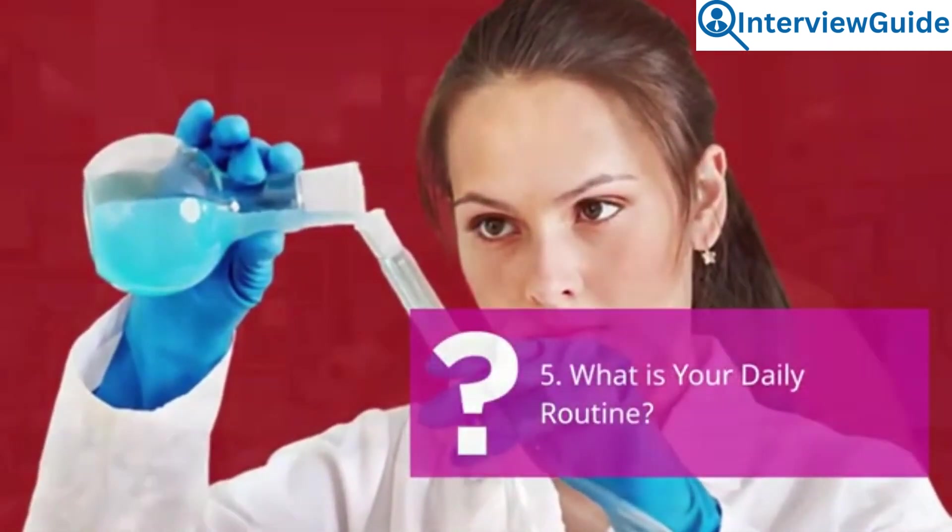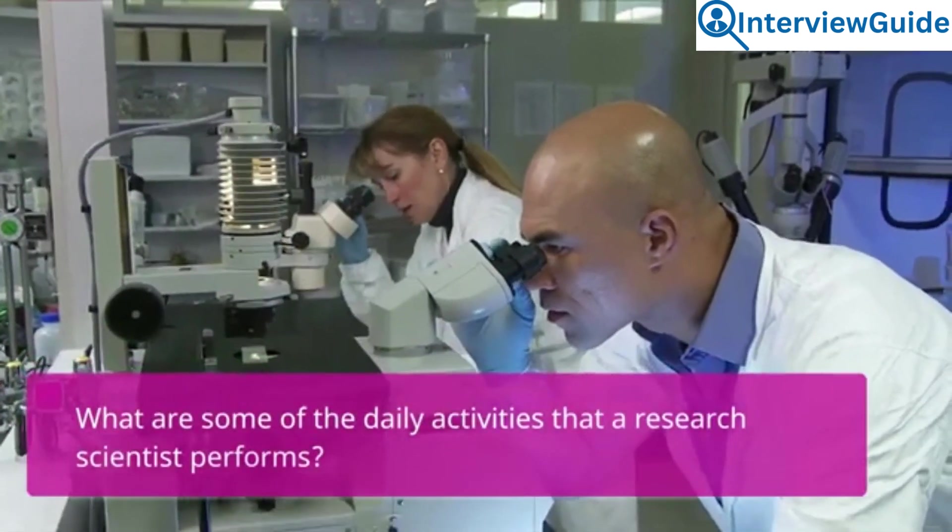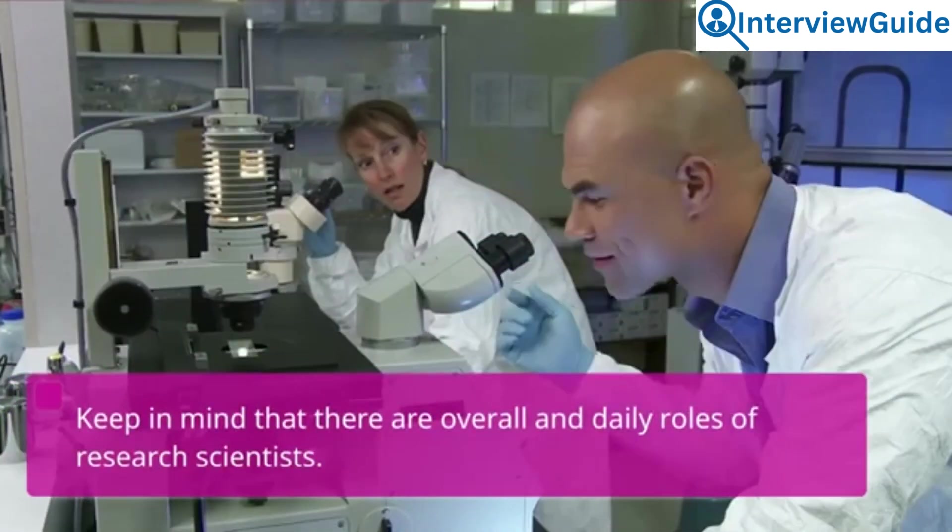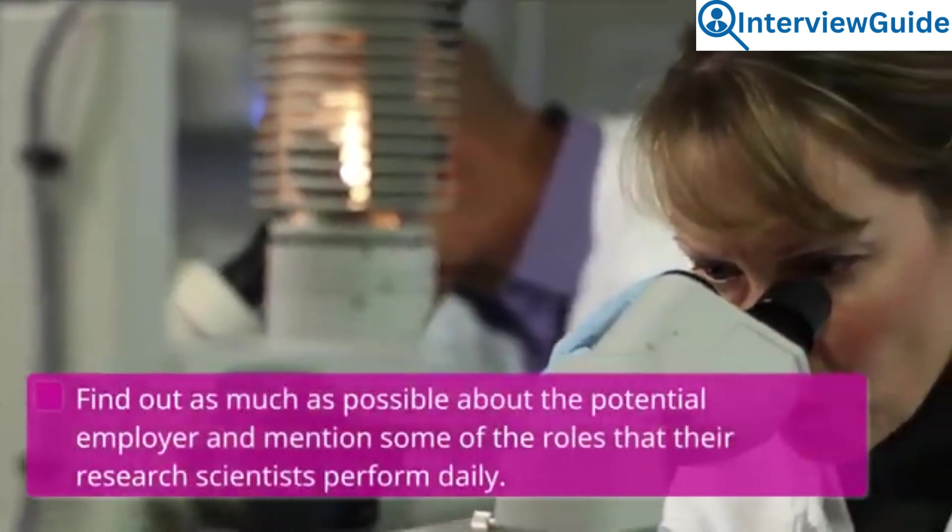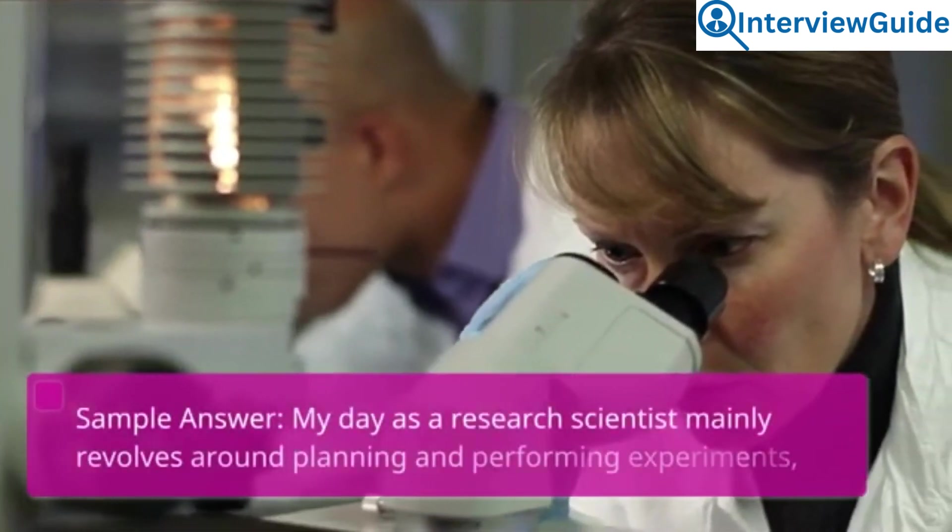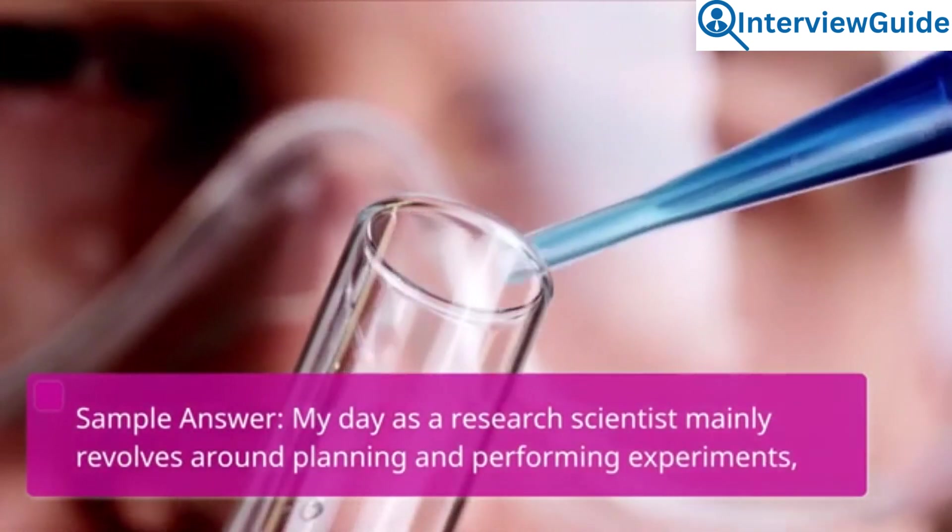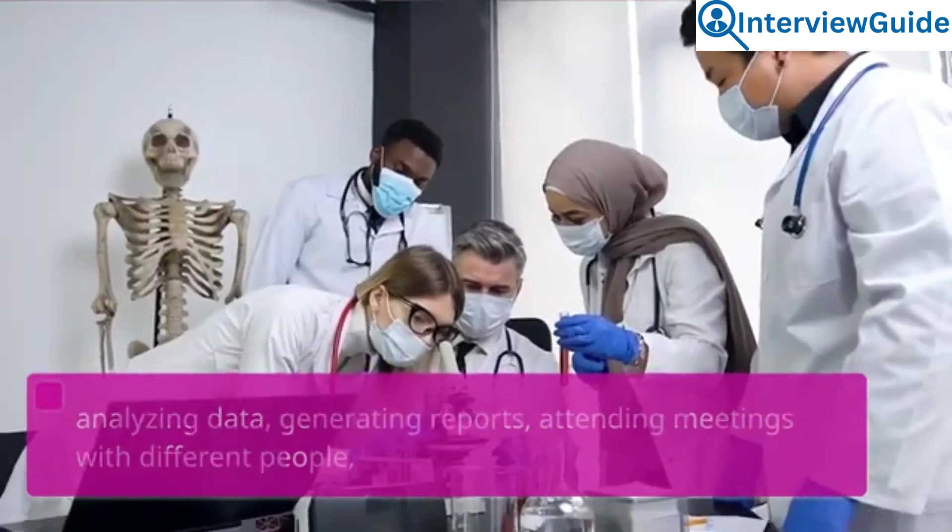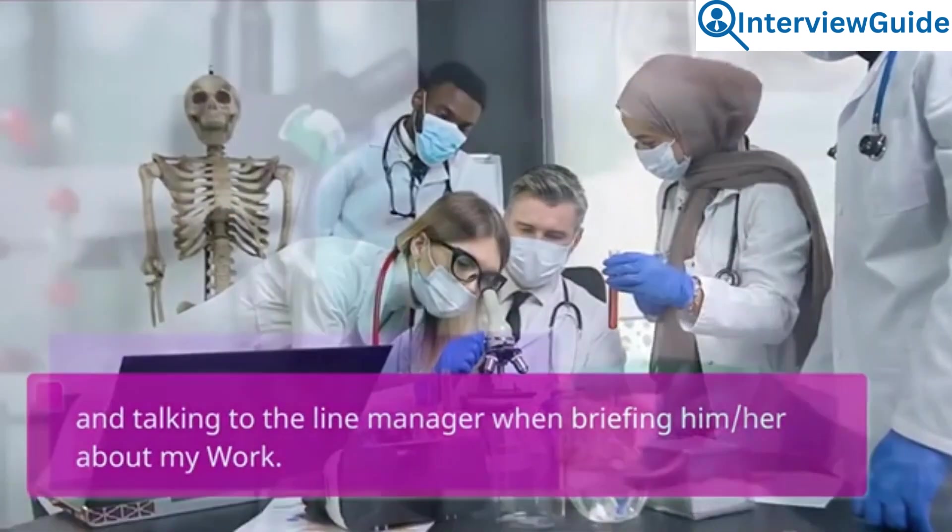Question 5: What is your daily routine? What are some of the daily activities that a research scientist performs? Keep in mind that there are overall and daily roles of research scientists. Find out as much as possible about the potential employer and mention some of the roles that their research scientists perform daily. Sample answer: My day as a research scientist mainly revolves around planning and performing experiments, analyzing data, generating reports, attending meetings with different people, and talking to the line manager when briefing him or her about my work.